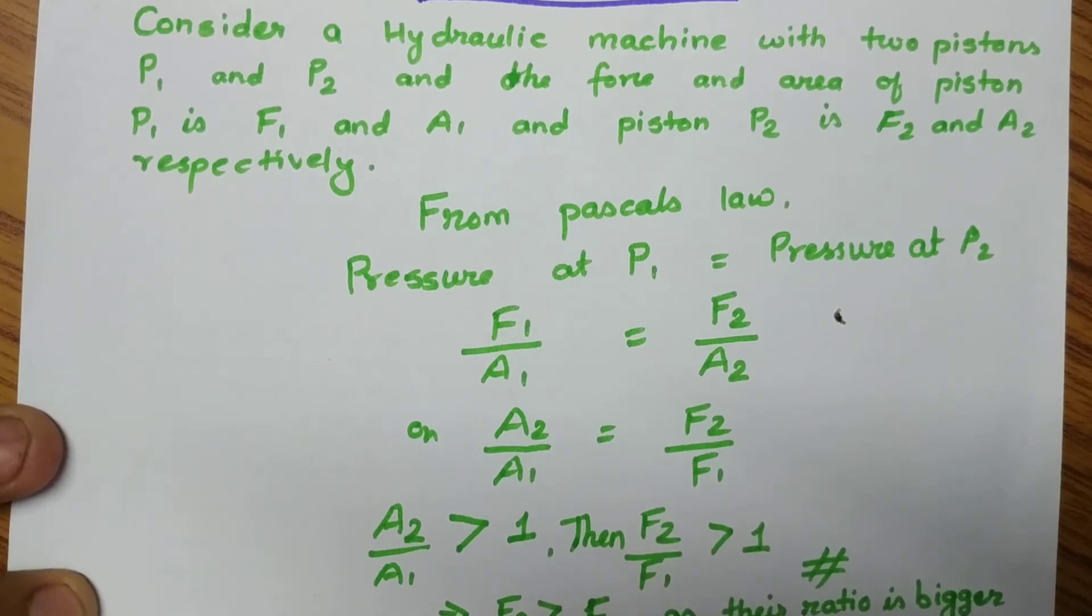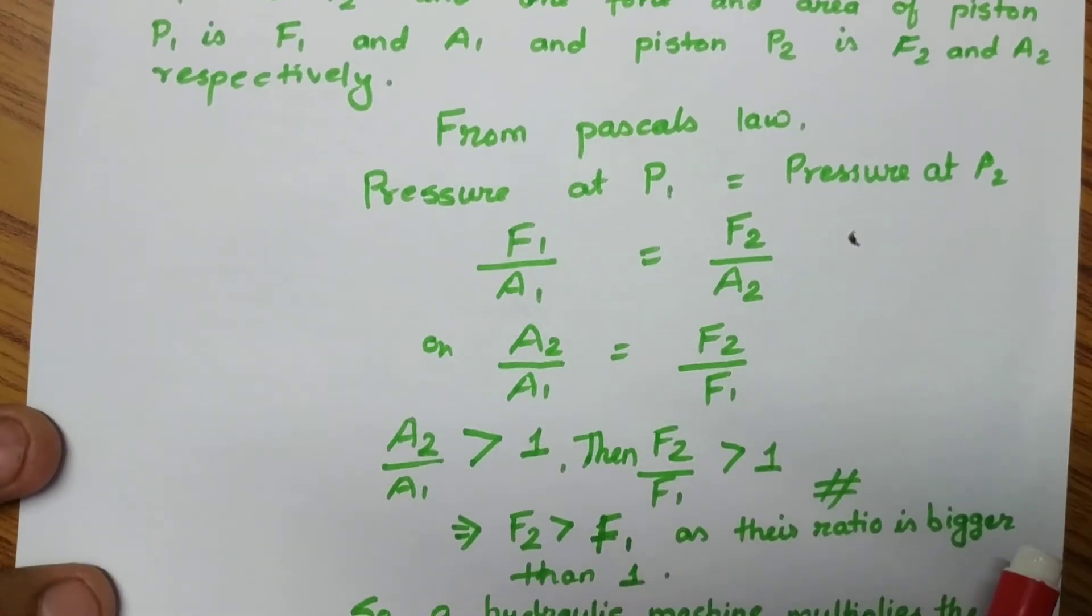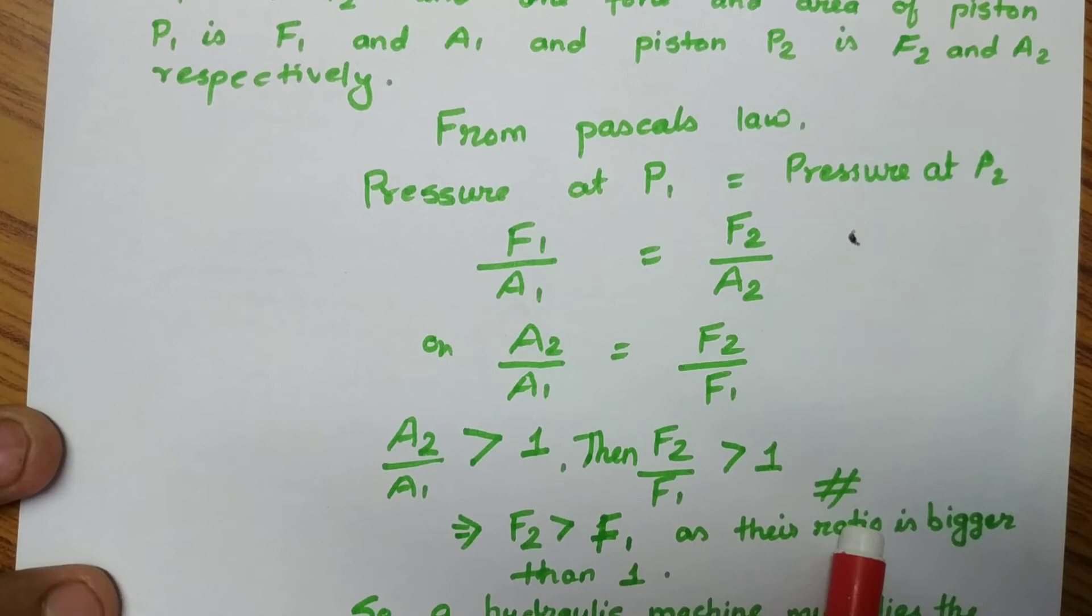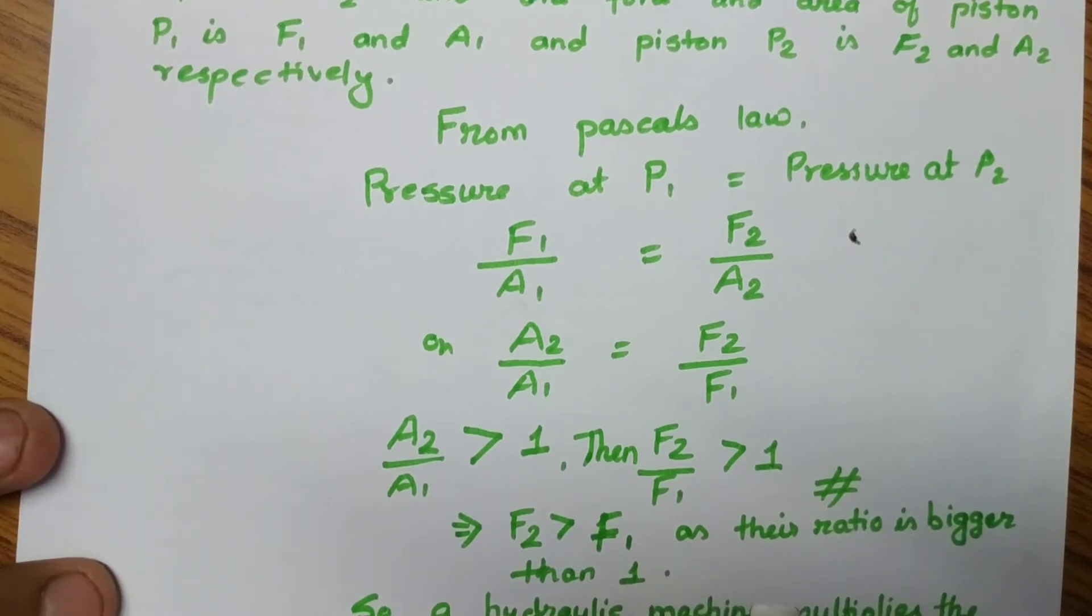So we can conclude that F2 is larger than F1, as their ratio is bigger than 1. This is the principle - the force in piston 2 is larger than F1.